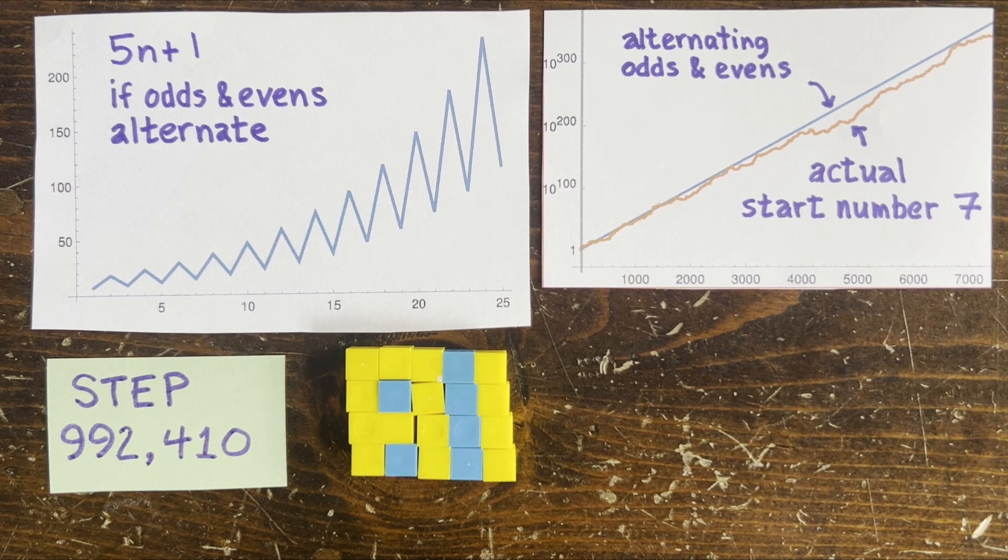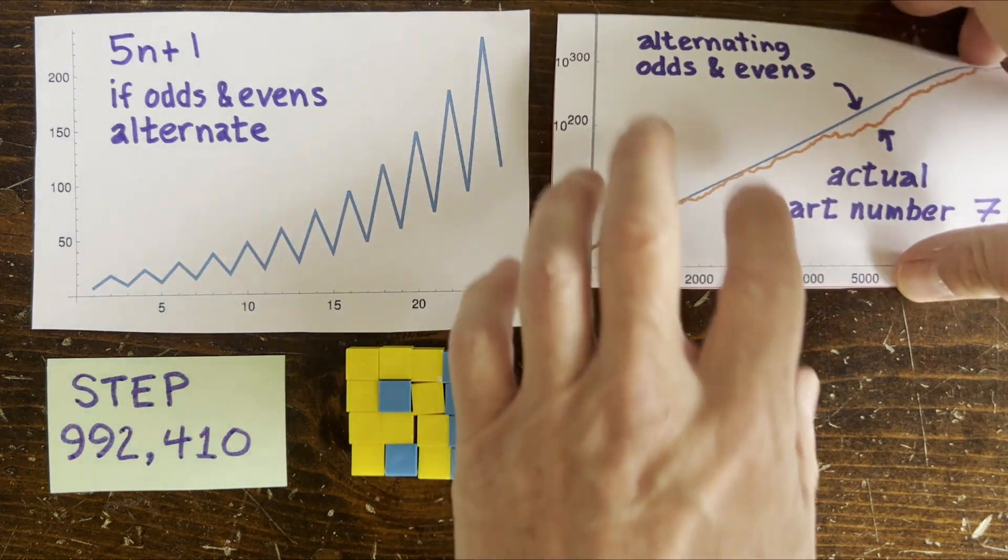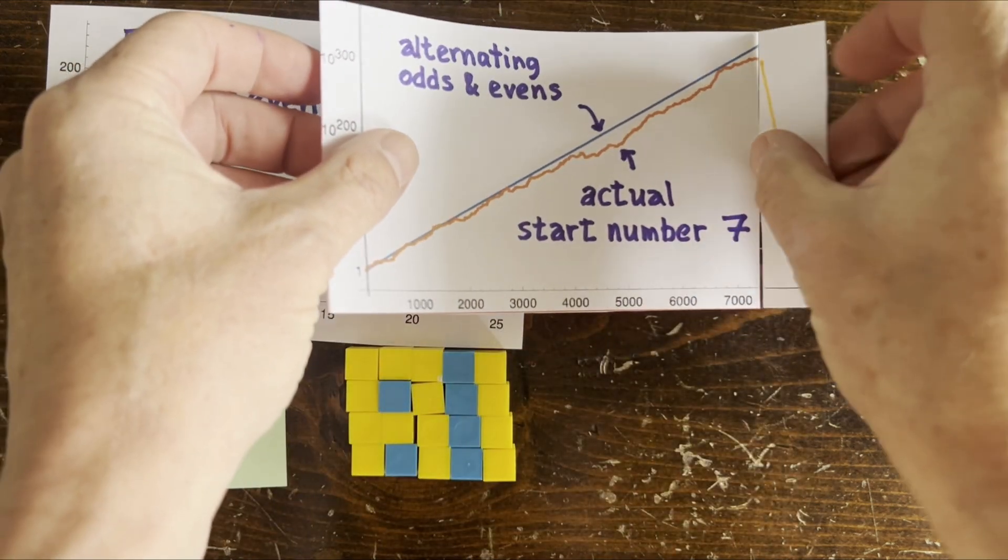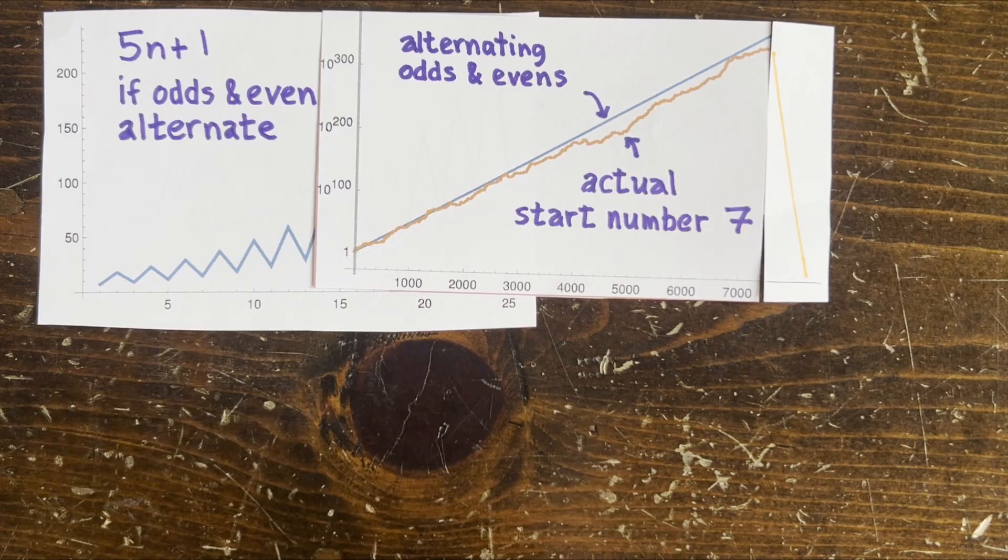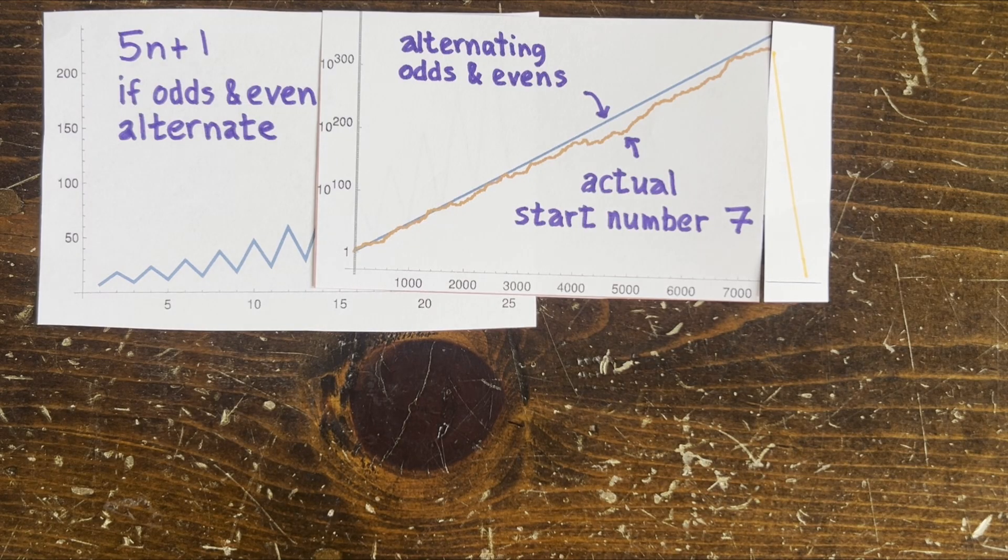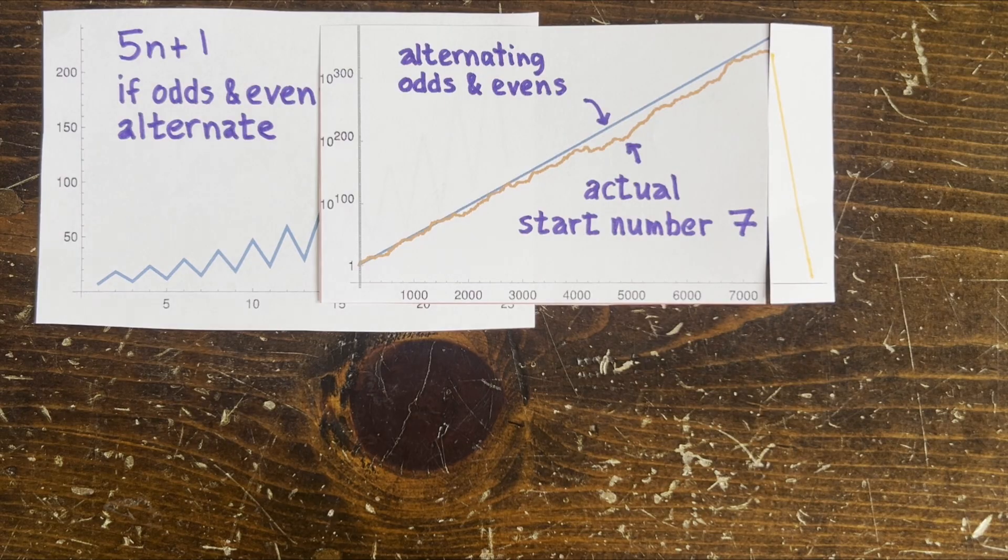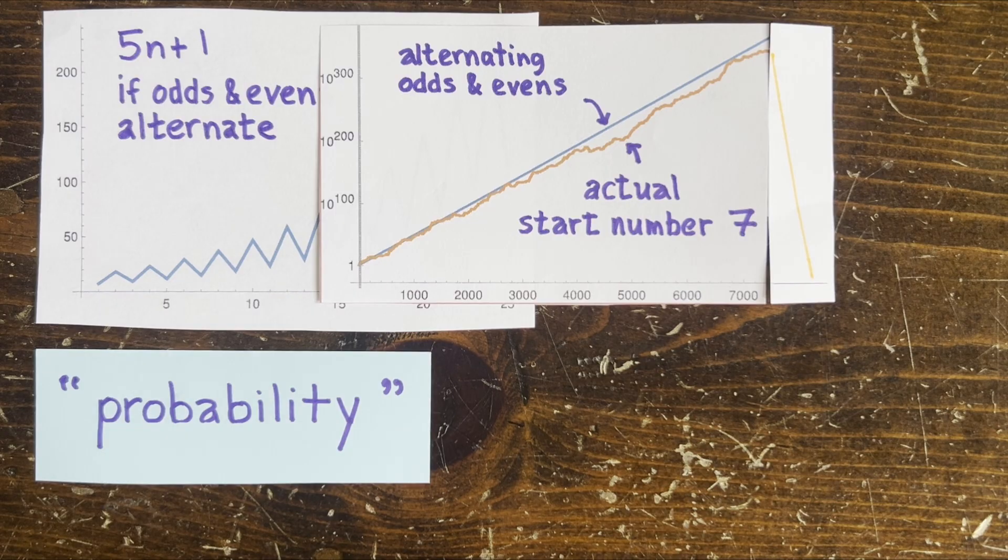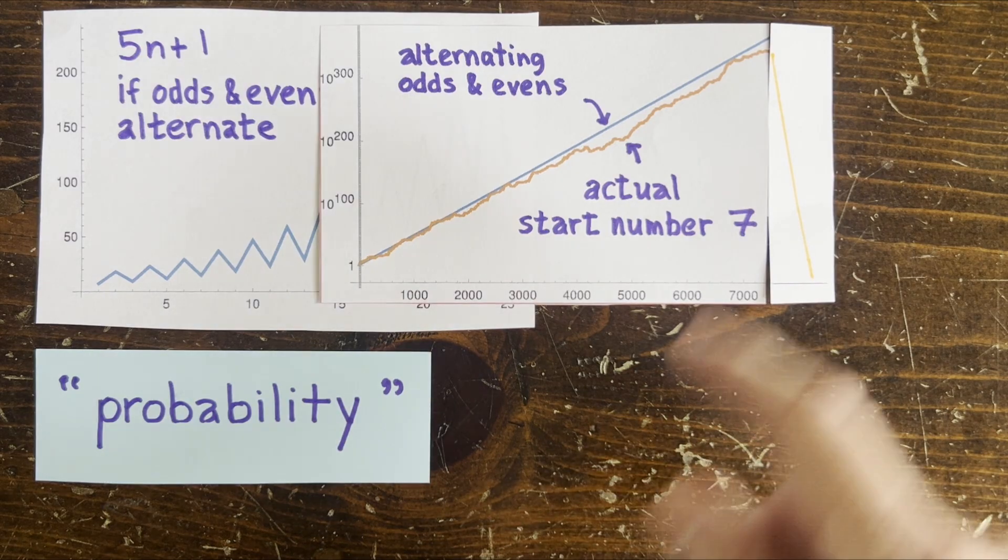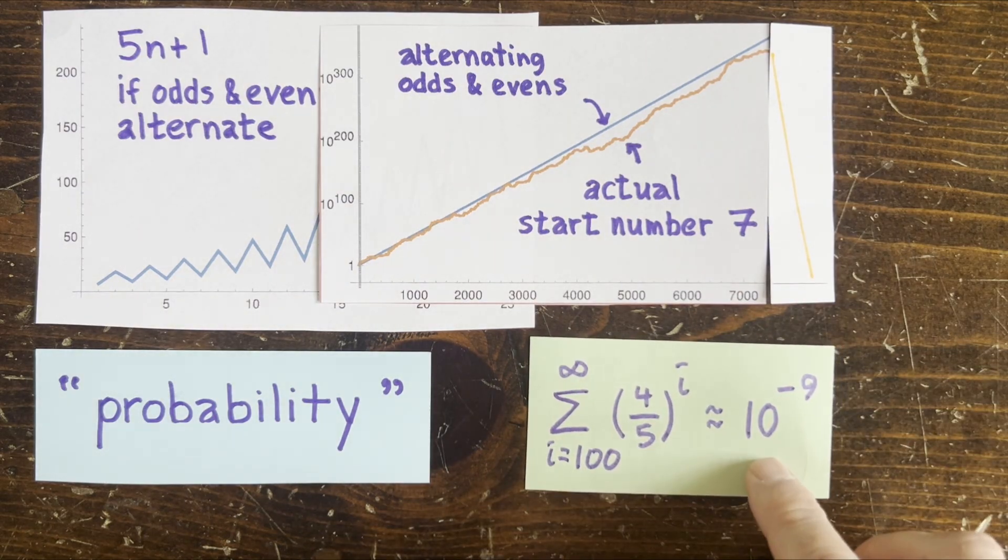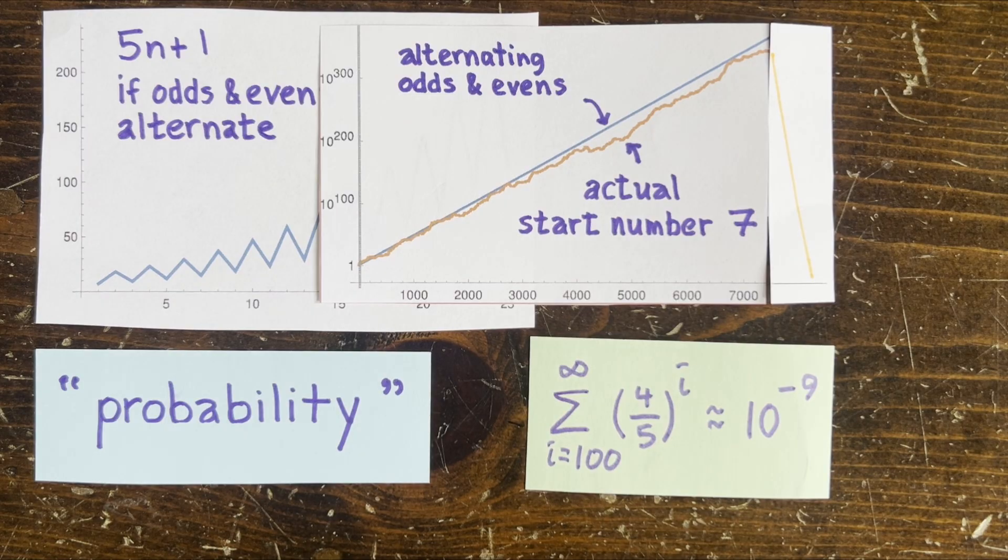But maybe not, because in fact, no one's managed to prove that 7 is a divergent number under 5n+1. Just a conjecture, because at any moment this orange trajectory could accidentally hit a power of 2 and come plummeting back to Earth. However, the probability of that seems pretty low, because at each step there's about a four-fifths to the n chance of hitting a power of 2. So, if you haven't hit one in the first 100 steps, there's only a one in a billion chance of it ever happening.